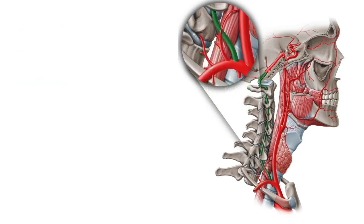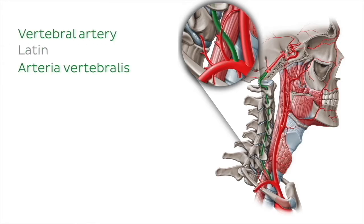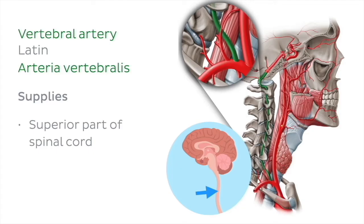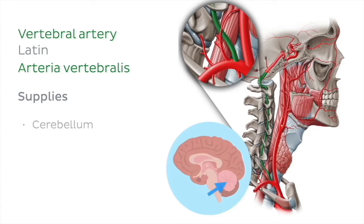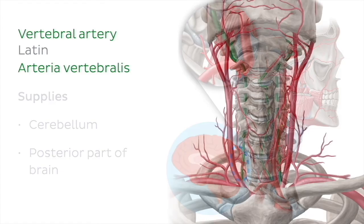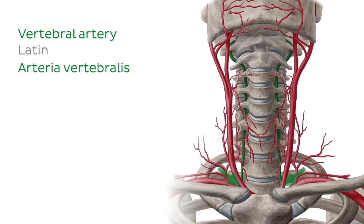The first arteries arising from each subclavian artery are the left and right vertebral arteries. We can see the right one in this image, highlighted in green. These arteries provide blood to the superior part of the spinal cord, brainstem, cerebellum and posterior part of the brain. Each vertebral artery originates from the first part of their respective subclavian artery, then courses superiorly through the neck in the transverse foramina of the cervical vertebrae, as you can see here in this image.